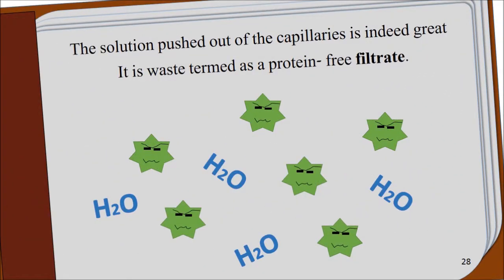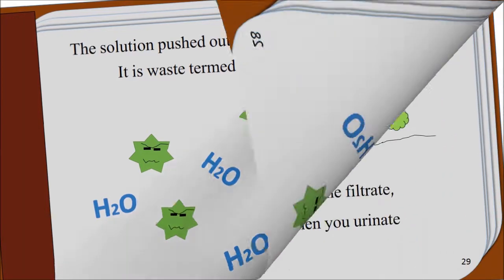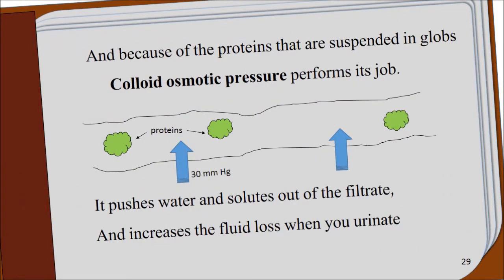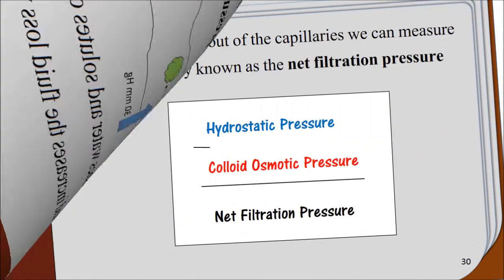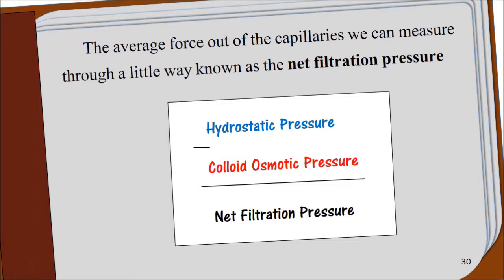The solution pushed out of the capillaries is indeed great. It is waste, termed as a protein-free filtrate. And because of the proteins that are suspended in globs, colloid osmotic pressure performs its job. It pushes water and solutes out of the filtrate, and increases the fluid loss when you urinate. The average force out of the capillaries we can measure, through a literal way known as the net filtration pressure.